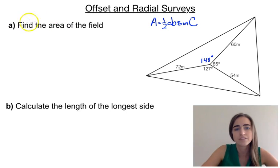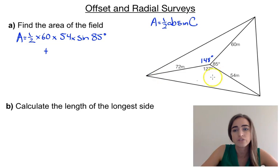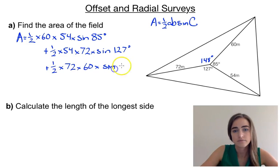So then we can do the sine rule three times. So we're going to have area is equal to half. If we do this triangle over here first, it would be half times 60 times 54 times sine 85. Now I'm going to add on this bottom one here. So we'll have half times 54 times 72 times sine 127. And then the last one is this one up here. So we've got half times 72 times 60 times that 148 that we just found. And if we pop all of that in your calculator and round, it would give us about 4,311 metres squared if all our measurements are in metres.